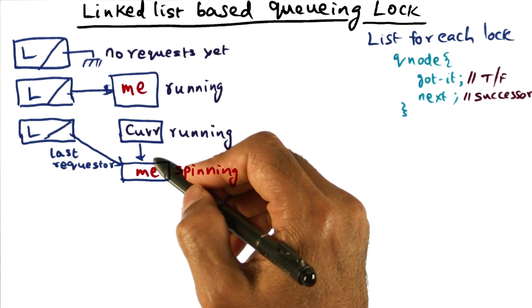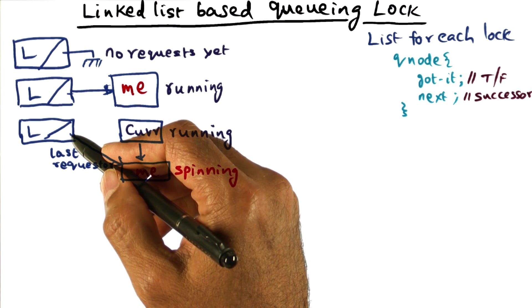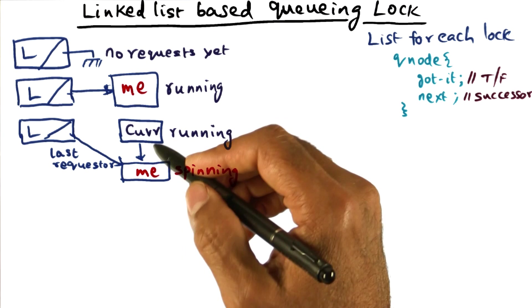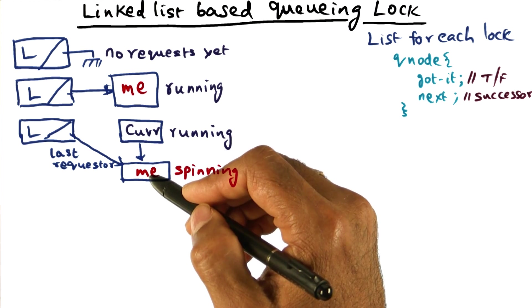And so when I come in, what I'm going to do is set this field of the lock data structure, the dummy node, the head node of the lock data structure to point to me. I'm the last requester. And I'm also going to fix up the linked list so that the current guy is going to point to me.